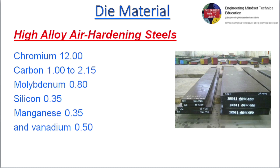High alloy air hardening steel: chromium 12.00, carbon 1.00 to 2.15, molybdenum 0.80, silicon 0.35, manganese 0.35, and vanadium 0.50.